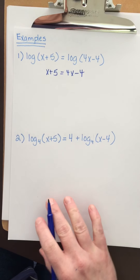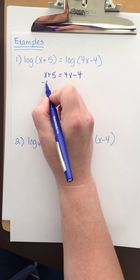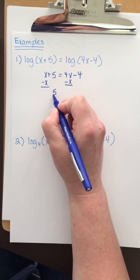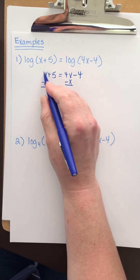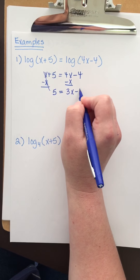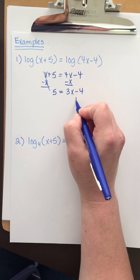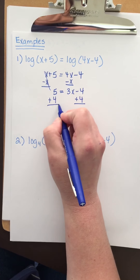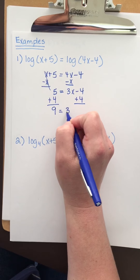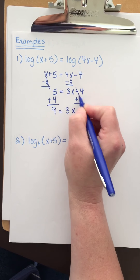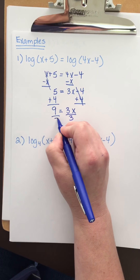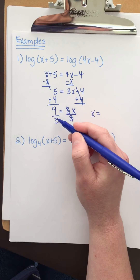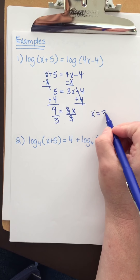Then you just solve this equation. I'm going to subtract x from both sides. I get five equals three x minus four. To get rid of the minus four, I'm going to add four. Five plus four is nine. To undo multiplication, we divide. And we get x equals nine divided by three, which is three.